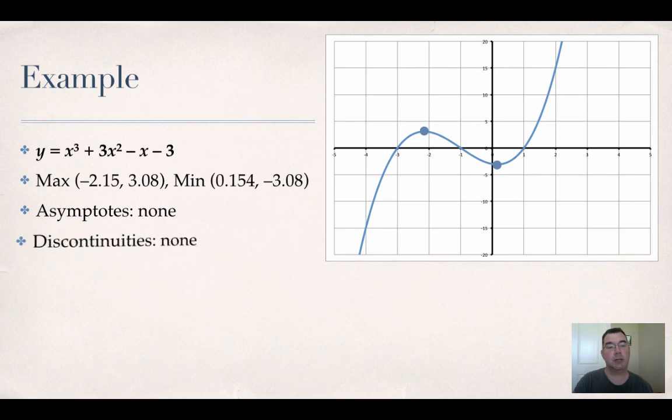There are no asymptotes. There are no discontinuities or holes. The domain is all real numbers and the range is all real numbers.